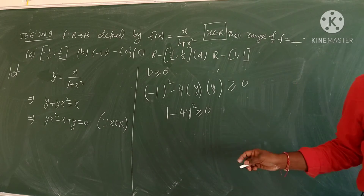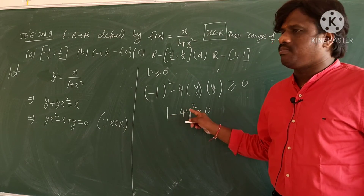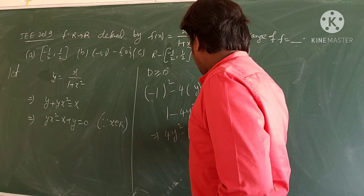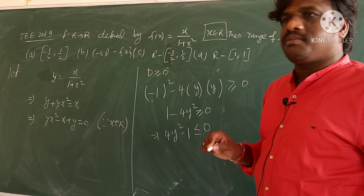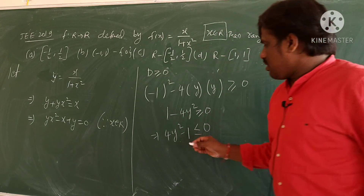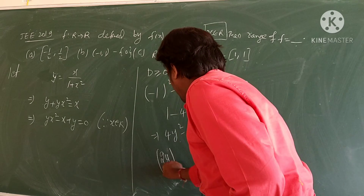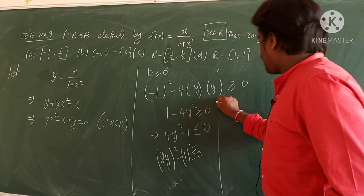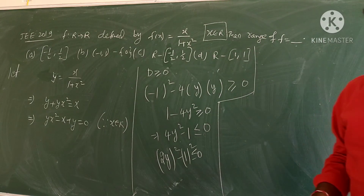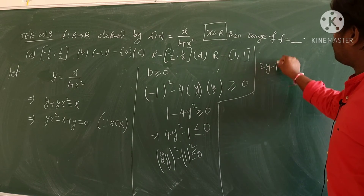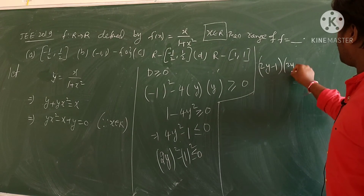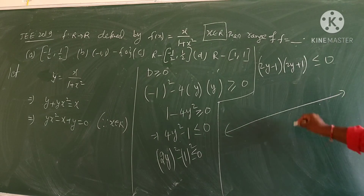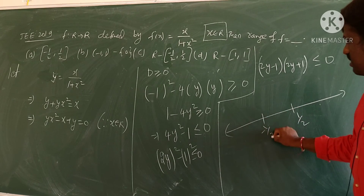Multiplying through by -1 (and reversing the inequality): 4y² - 1 ≤ 0. This factors as (2y - 1)(2y + 1) ≤ 0, which is a difference of squares form. Using the wavy curve method, the roots are y = 1/2 and y = -1/2.